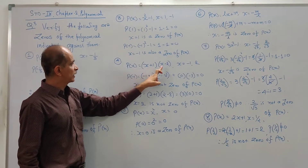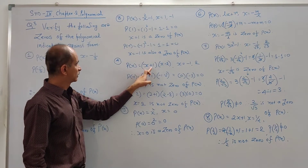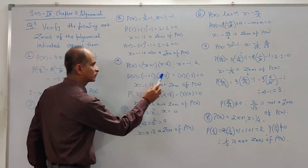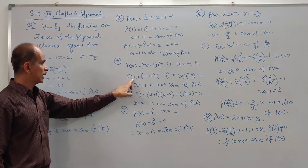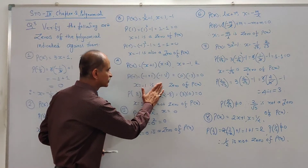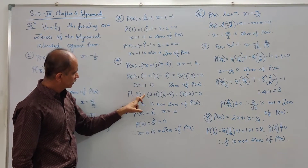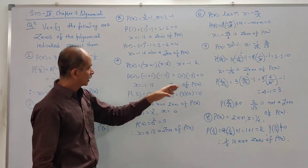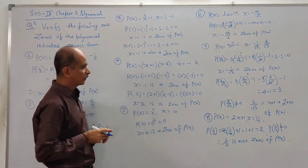Fourth example: P(x) = (x + 1)(x - 2), with x = -1 and x = 2. P(-1) = (-1 + 1)(-1 - 2) = 0 × (-3) = 0. The value at x = -1 is 0, so x = -1 is a zero of the polynomial. Now P(2) = (2 + 1)(2 - 2) = 3 × 0 = 0. Again we get 0, so x = 2 is also a zero of polynomial P(x).